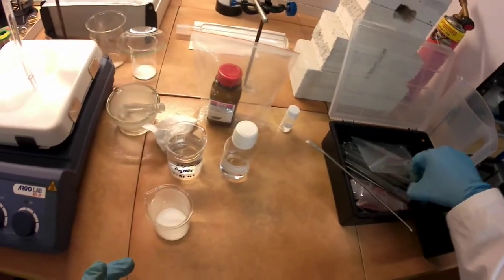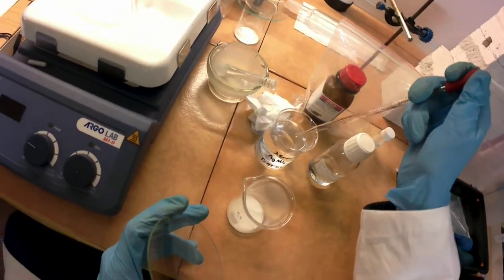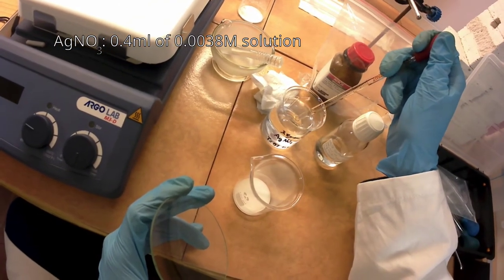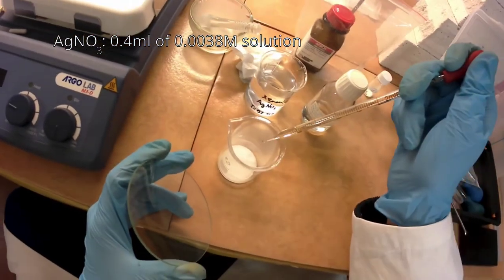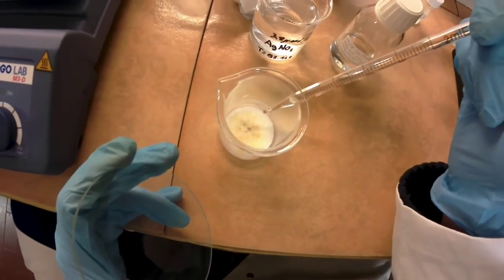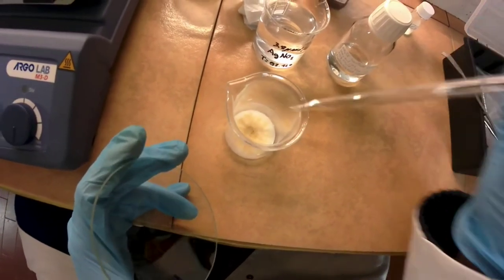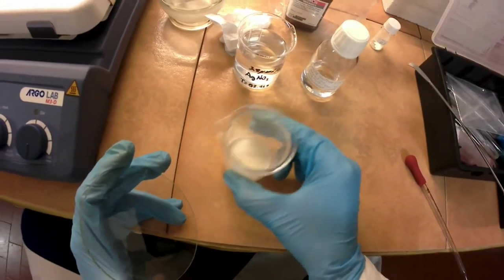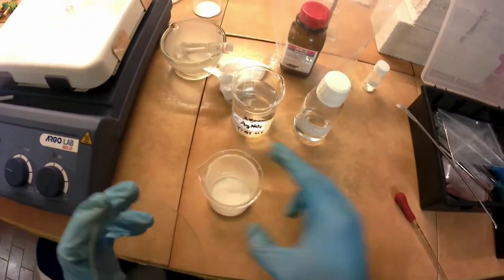A 3.8 millimolar solution of silver nitrate has been prepared beforehand. 0.5 milliliters of it is added to the zinc sulfide slurry. This will act as the dopant that will give us the blue color.